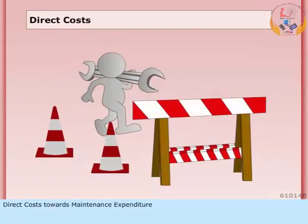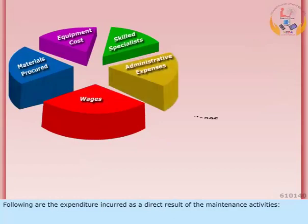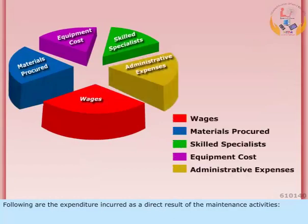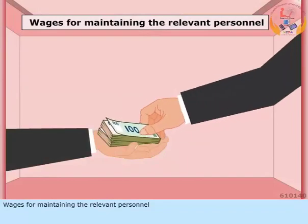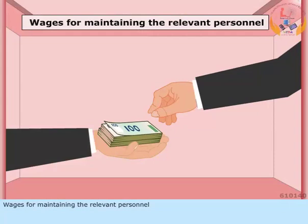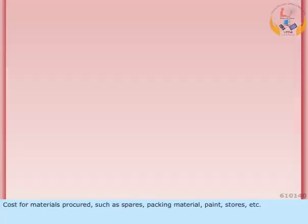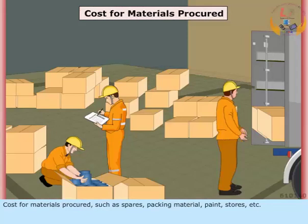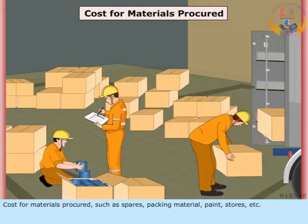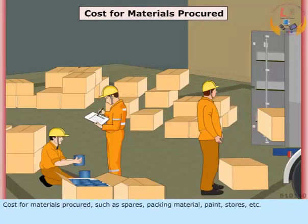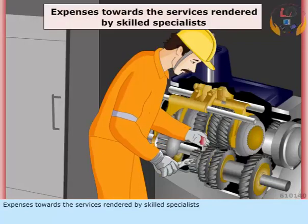Direct costs towards maintenance expenditure: the following are the expenditures incurred as a direct result of maintenance activities. These include wages for maintaining the relevant personnel, cost of materials procured such as spares, packing material, paint, and stores, as well as expenses towards services rendered by skilled specialists.